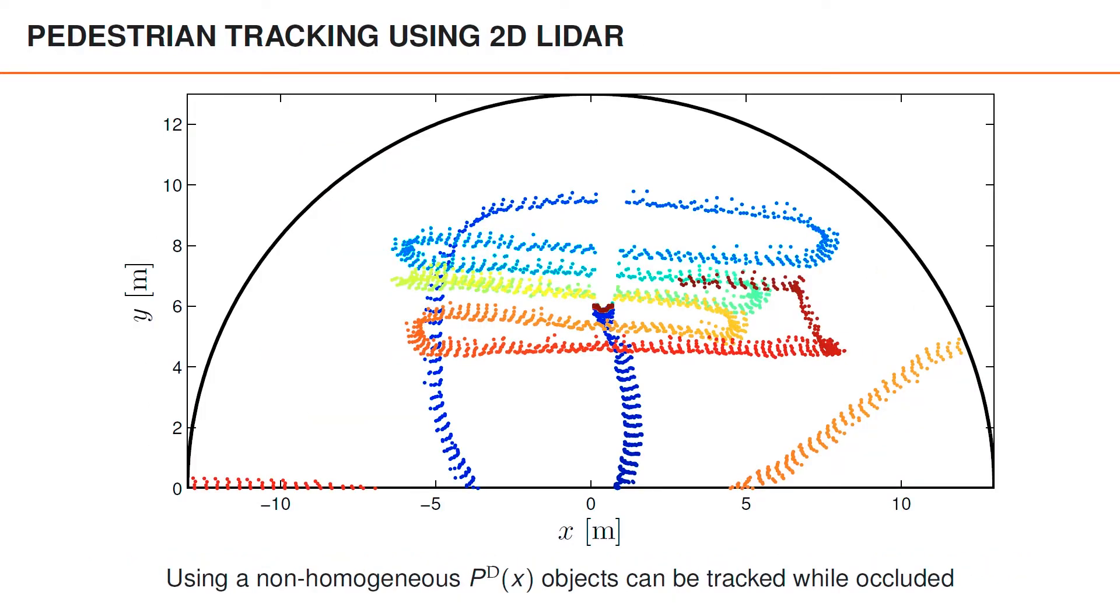Here we have some data from a 2D LIDAR, which is illustrated with different colors for different time steps. Blue is the early time steps, red is later. And a couple of pedestrians have walked around in the surveillance area. So this sensor is susceptible to the same type of occlusions as we just saw. And we can model these using a non-homogeneous probability of detection, PD. And if we do so, we can track objects even while they are occluded. And we can represent where undetected objects are likely to be located. So as you can see, in this data, one pedestrian stands still for a longer period of time in the middle of the field of view, which means that the area behind this person is occluded for a longer time.